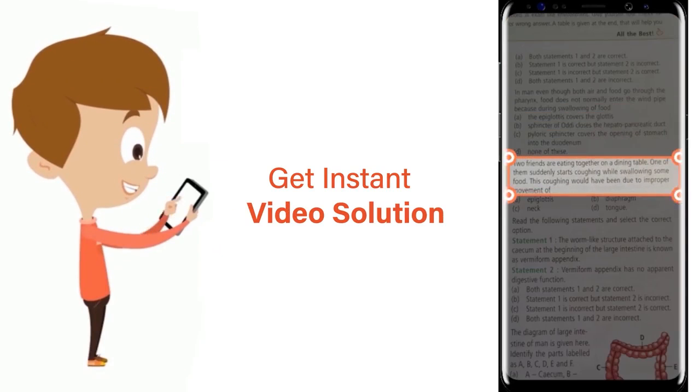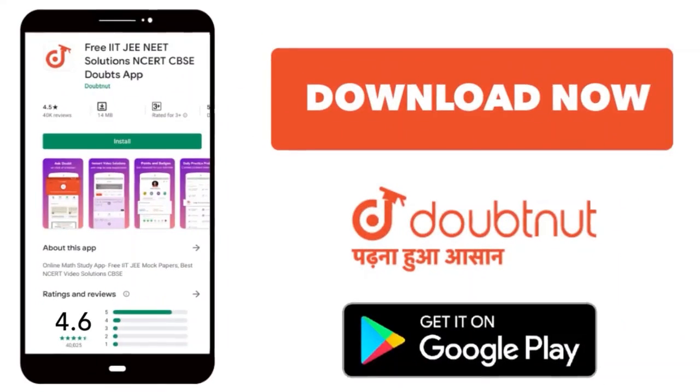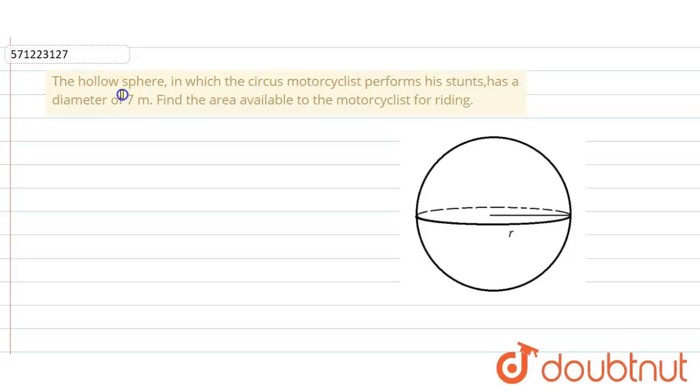The given question is: The hollow sphere in which the circus motorcyclist performs his stunts has a diameter of 7 meters, and we have to find the area available to the motorcyclist for riding.